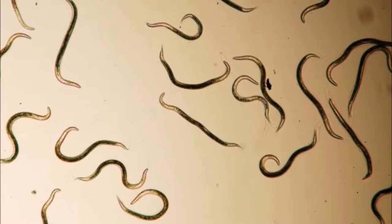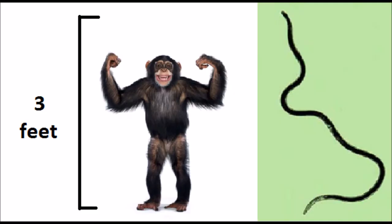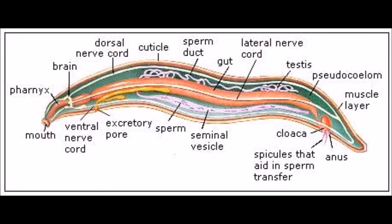Most nematodes are small. They range in size from 100 micrometers, which is smaller than we can see with the naked eye, to 1 meter, which is 3 feet long. Nematodes have a well-developed nervous system with 6 longitudinal nerves that extend through the body and 6 shorter nerves that extend toward the mouth.